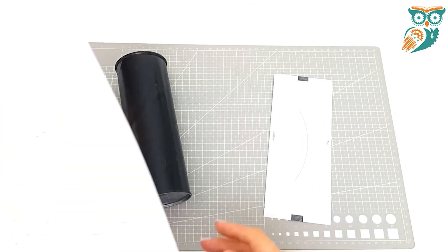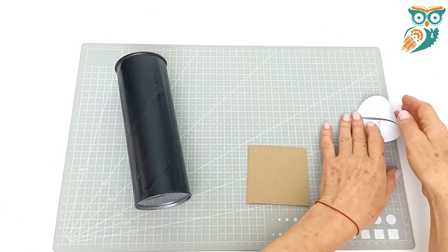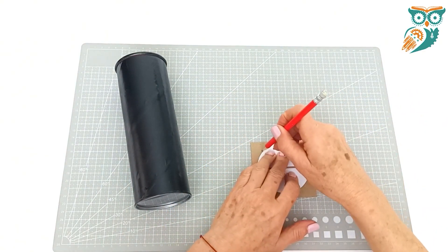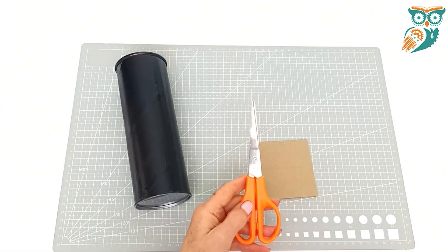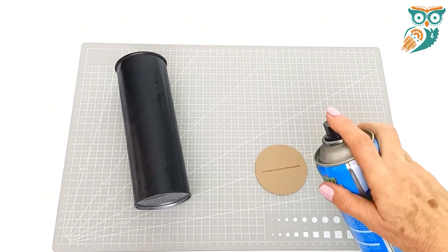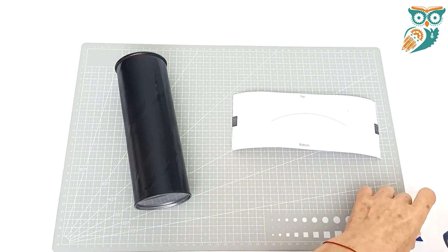We've got the templates available on the website and I'll have a link down in the description. We're going to cut out the different parts of the template and take the circle and trace it onto a piece of scrap cardboard. Make sure you cut it out nice and neat and there's also a slot in the middle. You want to make sure you cut that out as well before spray painting it all black.